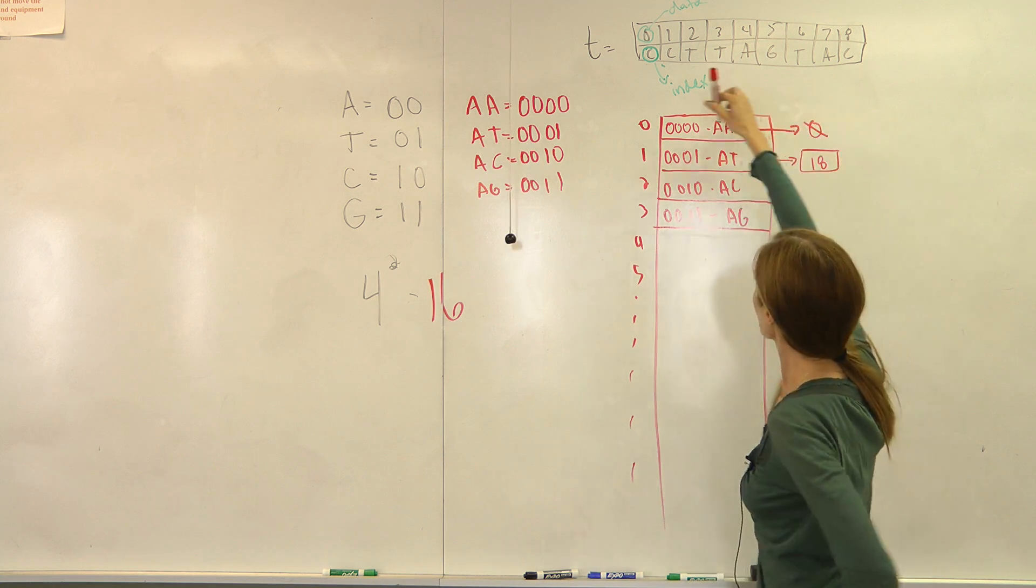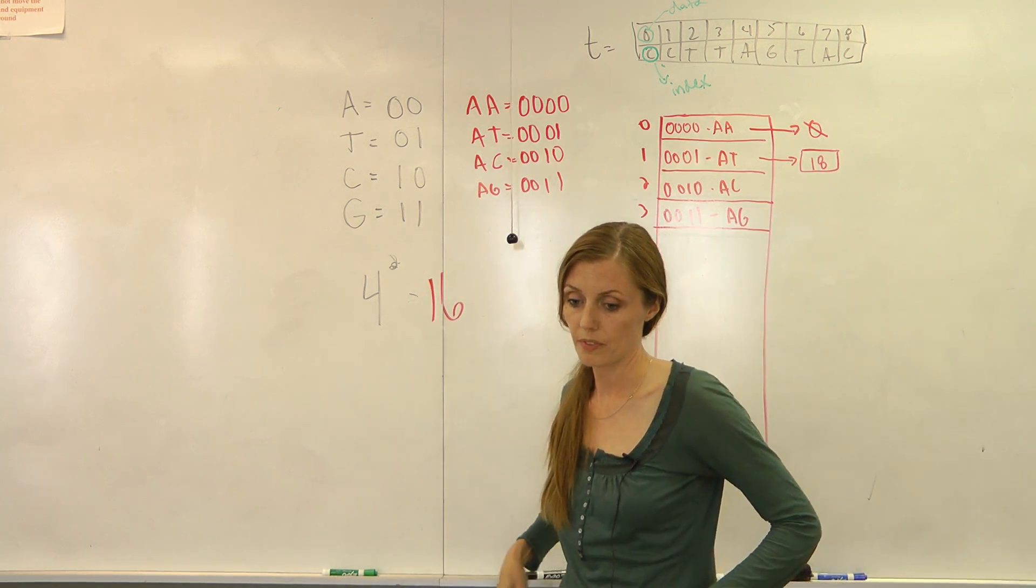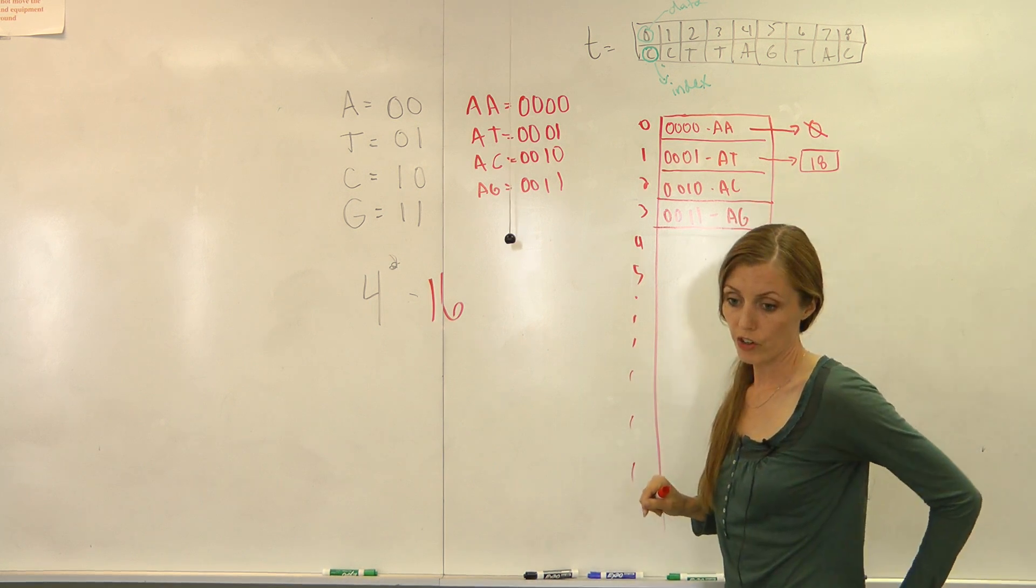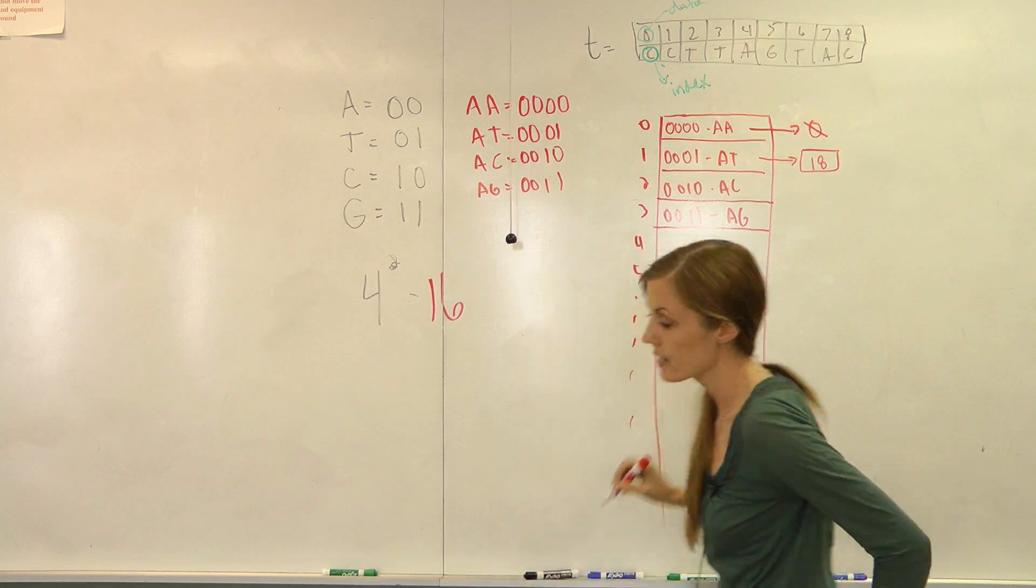So here the index of our text becomes the content of our hash table. And then say the next one, AC, we look for occurrences of AC in our text. There is one at index 8.